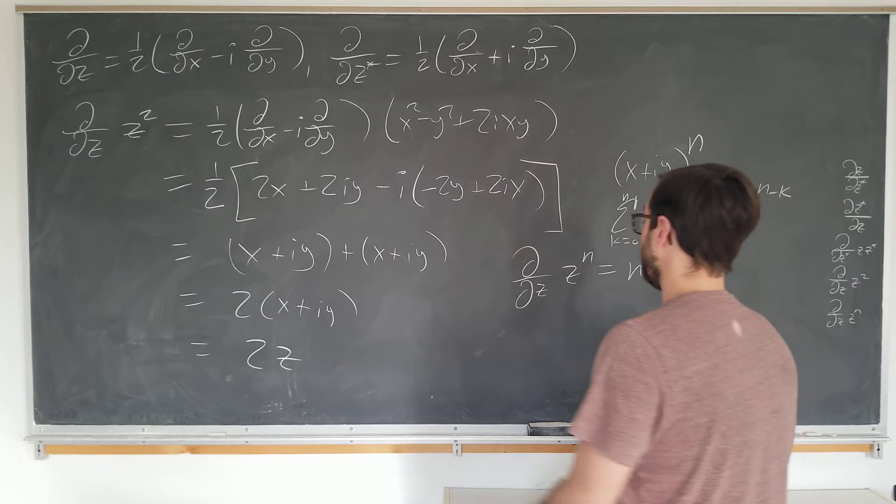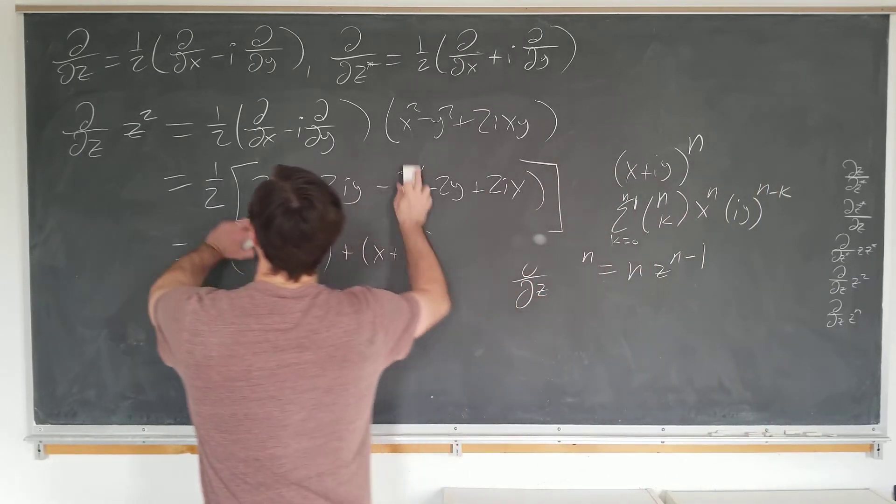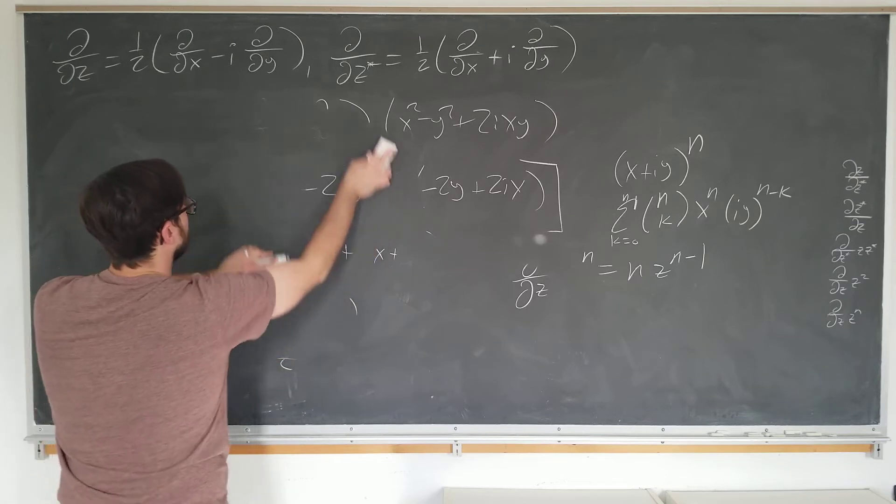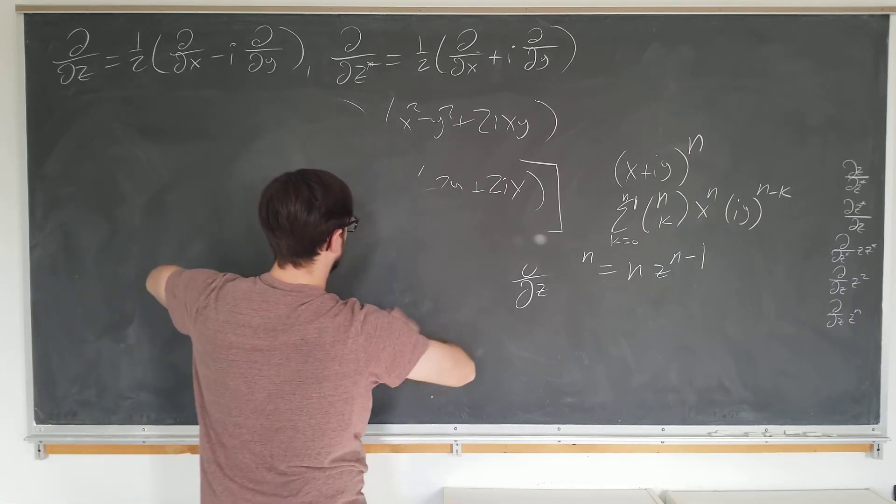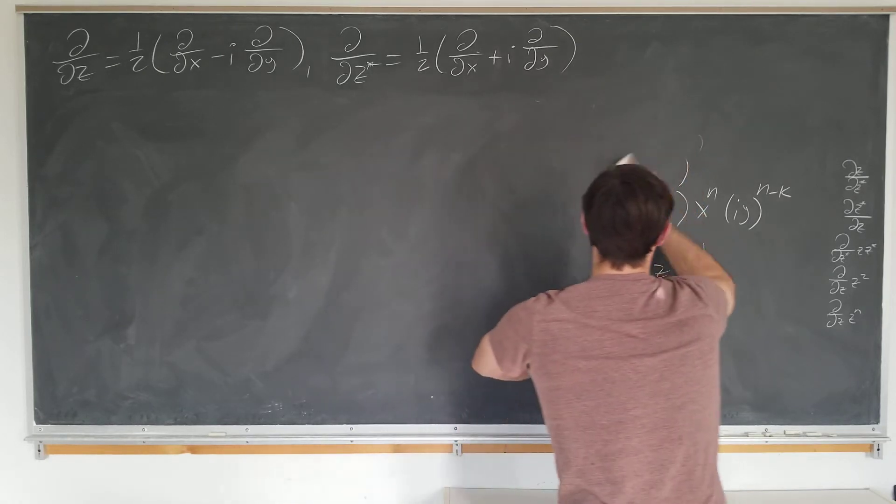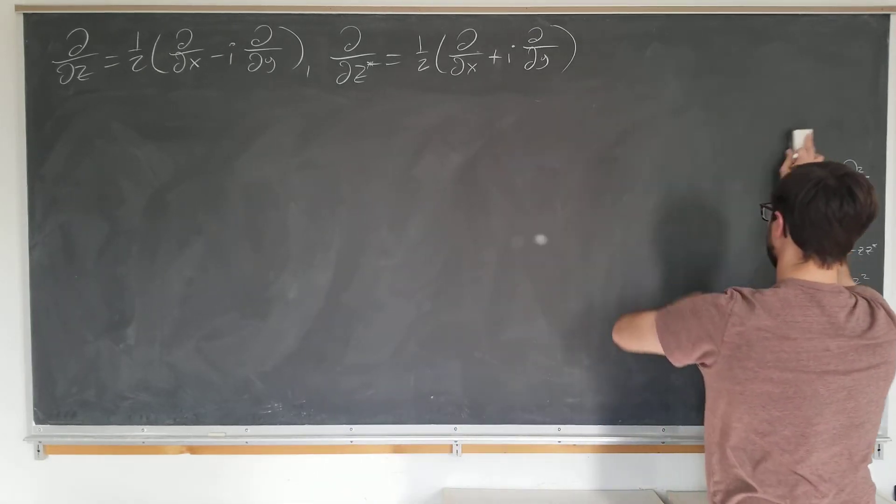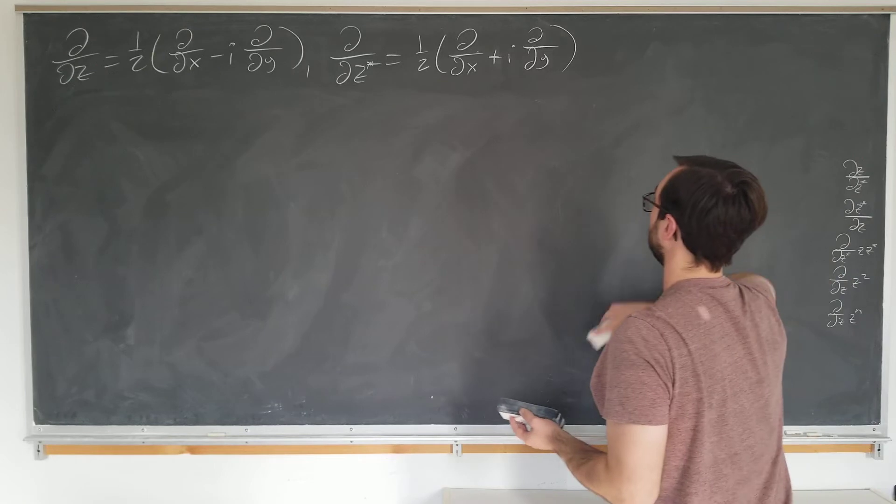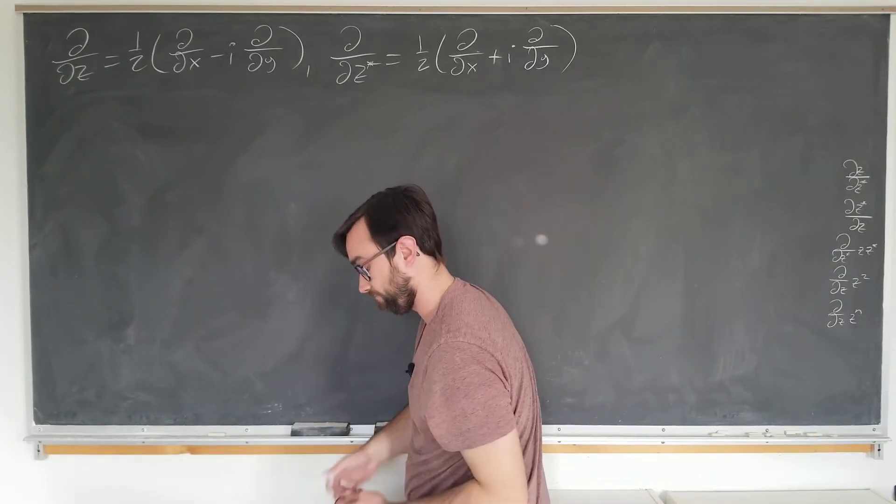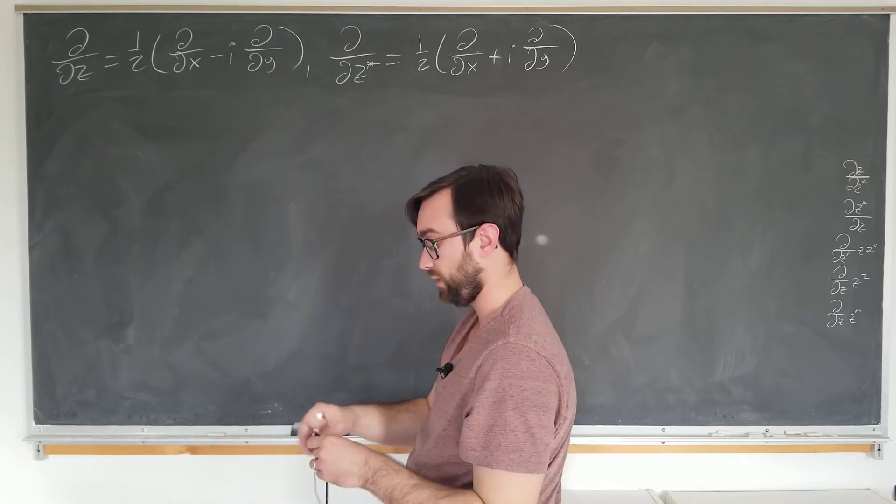I'm going to use the chain rule actually, which you could do in the n equals two example. I think it's just more illustrative if I expand it out, since we don't actually have to use the binomial expansion.